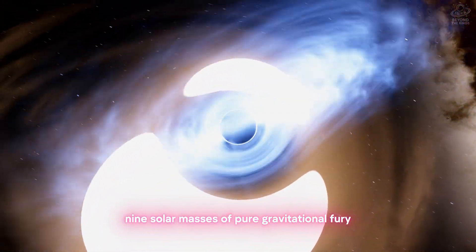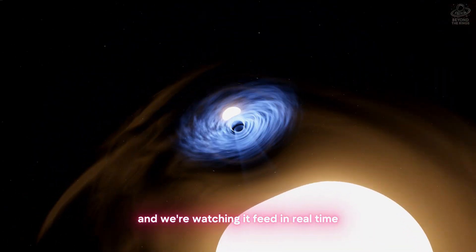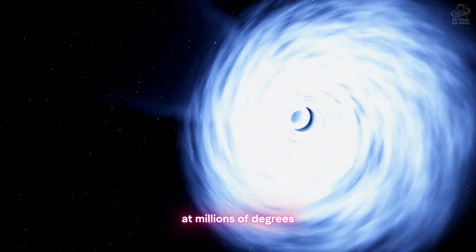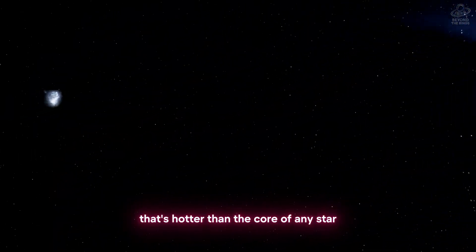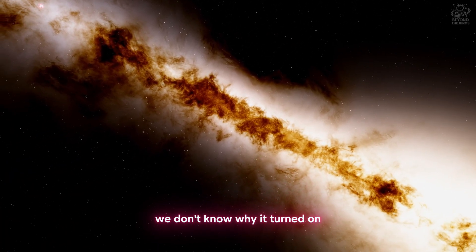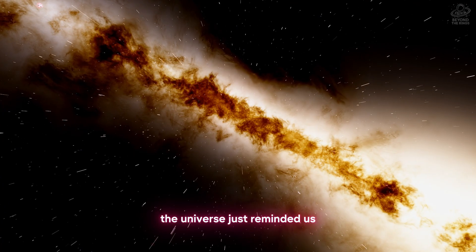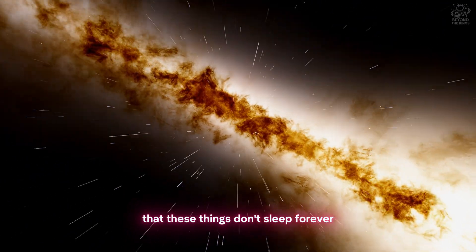This is what happens when a black hole decides it's hungry. Nine solar masses of pure gravitational fury, and we're watching it feed in real time. The disk of matter around it is glowing at millions of degrees. That's hotter than the core of any star. But here's the disturbing part. We don't know why it turned on. We don't know when it will happen again. And we don't know if there are others out there, waiting. The universe just reminded us that these things don't sleep forever.